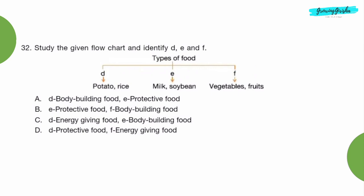Question 32: Study the given flow chart and identify D, E, and F. Option C, D is energy giving food and E is body building food.